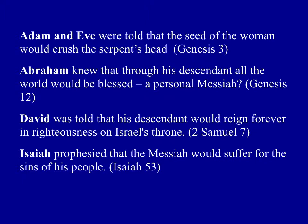Abraham was told that through his descendants all the world would be blessed in Genesis chapter 12 — no reference to a personal Messiah, but that through Abraham's descendants the world would be blessed. David was told that his descendant would reign forever on Israel's throne — the Messiah would be a descendant of his, reigning forever in righteousness and justice. But David wasn't told the Messiah would accomplish salvation by suffering and dying; we only get that in Isaiah chapter 53. So there's a progressive, gradual revelation of the nature of salvation — biblical theology is a snapshot at one particular point in time.